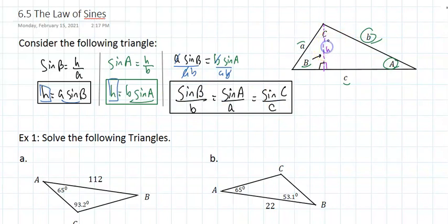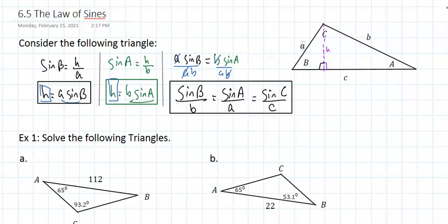And that equals the sine of C over side C. That's the famous law of sines, once you eliminate the height from the equation. For any triangle, the sine of an angle divided by the opposite side should equal the sine of any other angle divided by its opposite side. That's the law of sines.